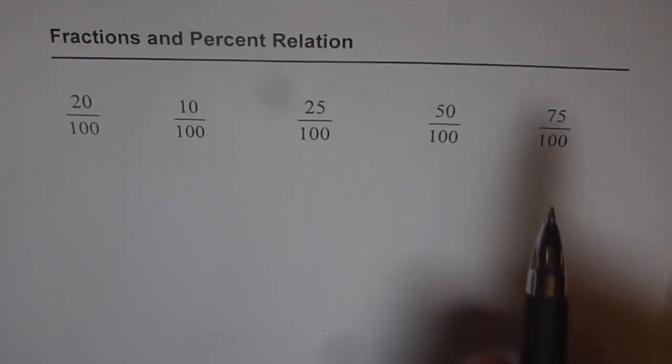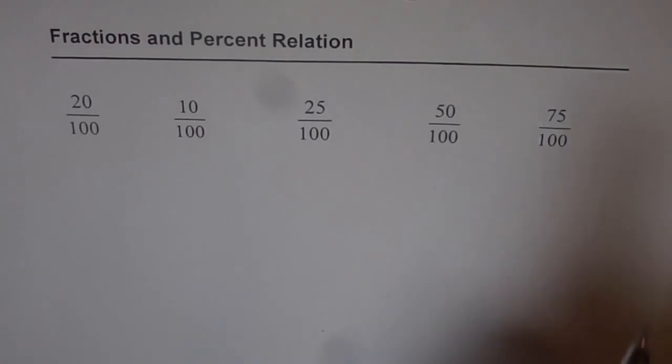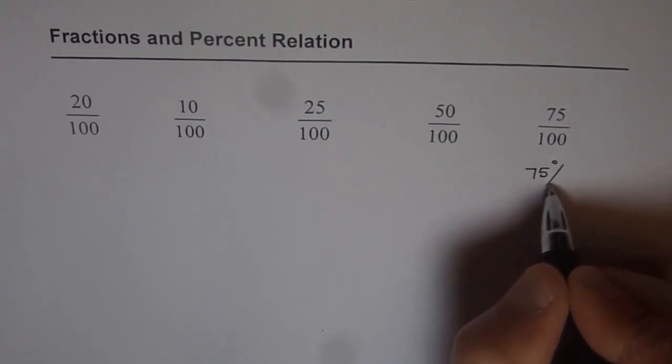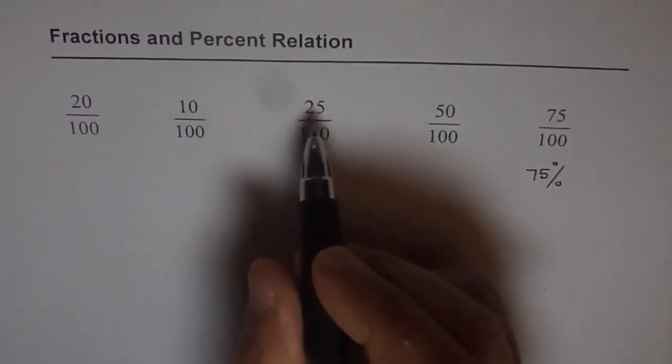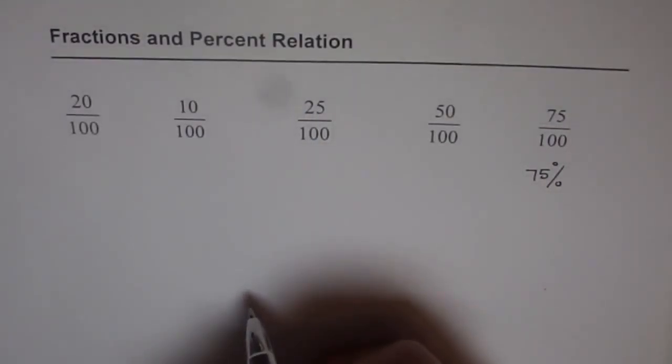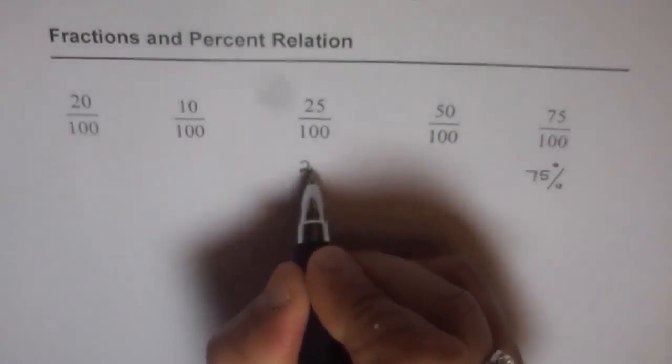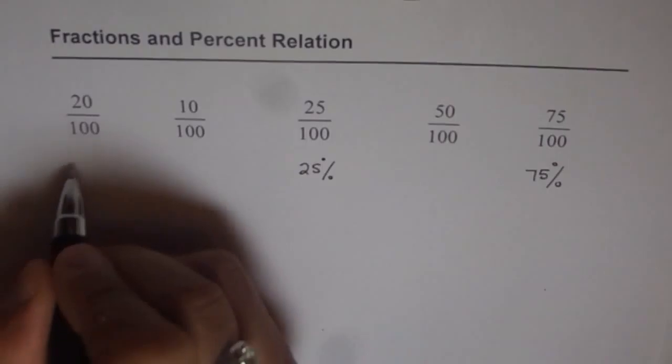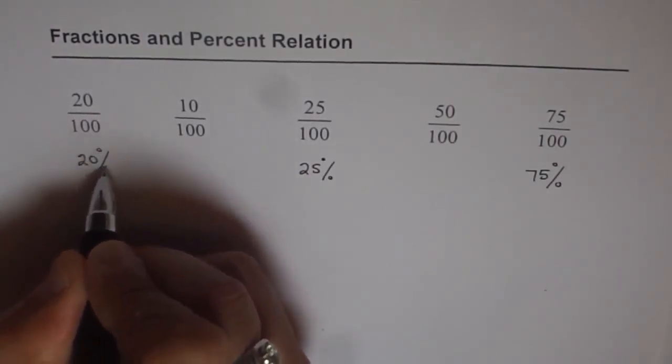So for example, if it is 75 over 100, what can I say this is? We can say this is 75 percent, correct? How about 25 over 100? It will be called 25 percent, right? And 20 over 100 will be 20 percent, correct?